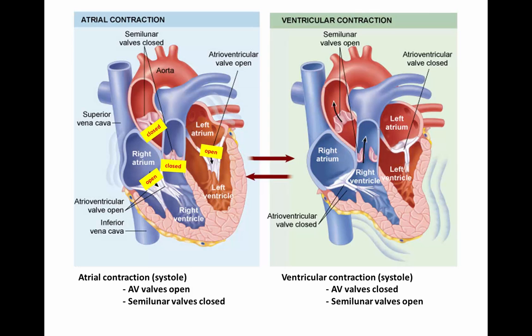During ventricular systole — the part of the cardiac cycle when the ventricles are contracting — they pump blood into the pulmonary trunk and the aorta. The pulmonary and aortic semilunar valves need to be open, and the AV valves are closed, blocking backflow from the ventricles up into the atria.